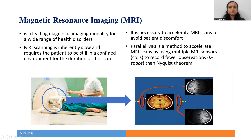There are multiple coils and every coil is differently sensitive to a given region of the object. In a c-bar number of coils setting, the k-space acquired by the i-th coil can be given by encoding the underlying image g using a sensitivity matrix S_i, applying the Fourier transform operator F, and applying an under-sampling mask M.